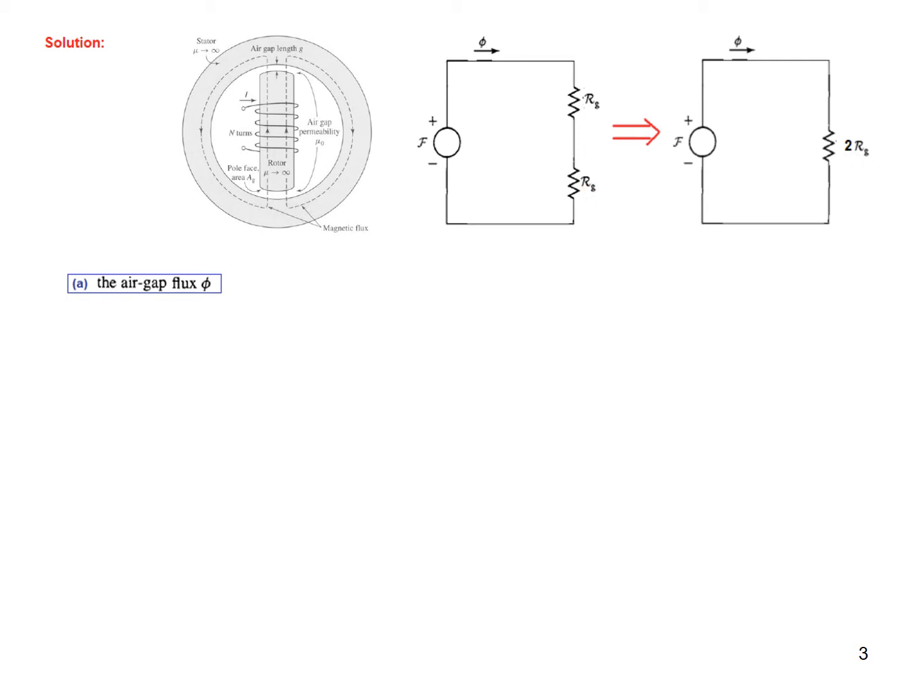So the net or total reluctance is 2Rg. For the air gap flux, we know the formula: flux is F over R total, whereas F is N into I, number of turns and current, divided by R total, in this case 2Rg. And Rg from this formula we know is g over μ₀Ag. So we'll plug in that.